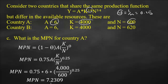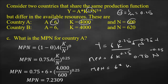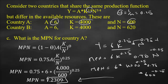The alternative way is to plug in the numbers and get the first derivative of the production function with respect to N. With Y = 6 × K^0.25 × N^0.75, treating 6 and K^0.25 as constant, the derivative gives: MPN = 6 × K^0.25 × 0.75 × N^(-0.25). Substituting K = 4,000 and N = 600 gives the same answer: 7.2309.